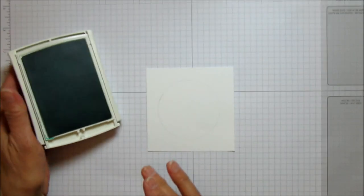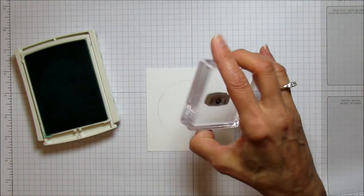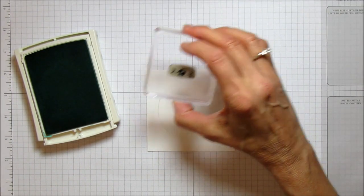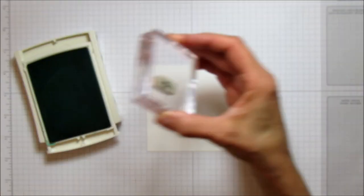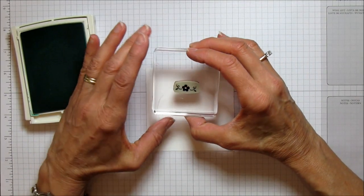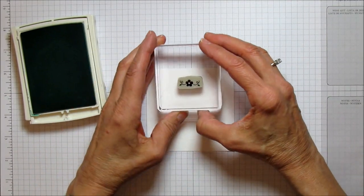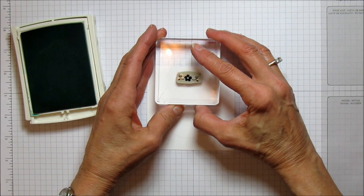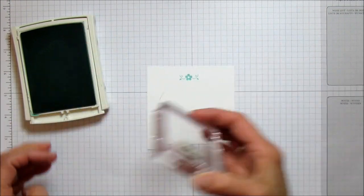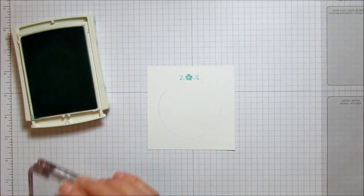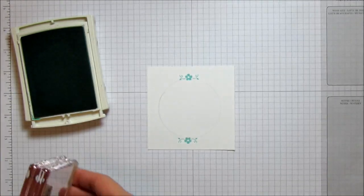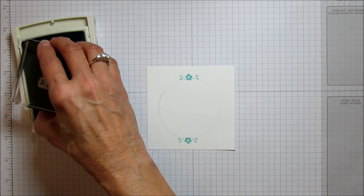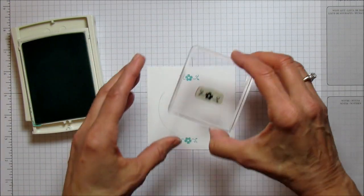I'm going to use the Coastal Cabana ink, and this is the little flower that we're using. The way that I do this that I find it's the easiest when you're going around in a circle is to stamp the top, and then I do the bottom next so they come out pretty even around.